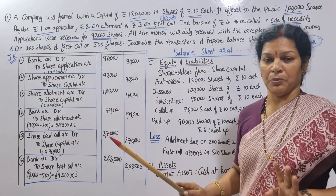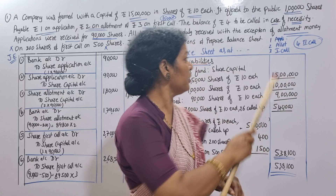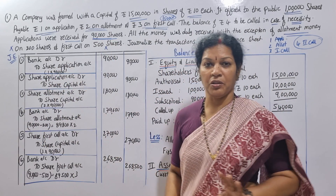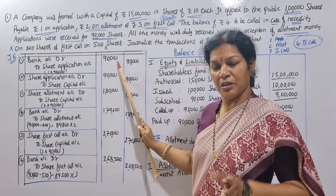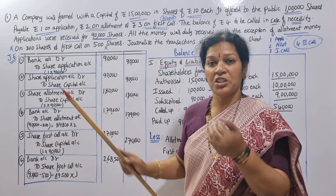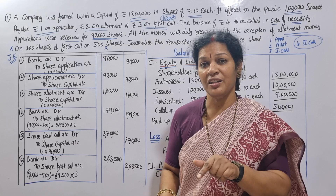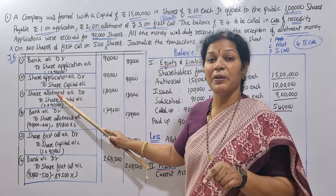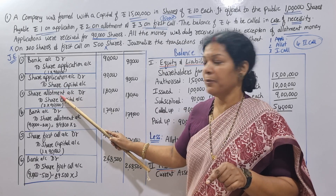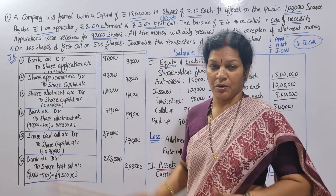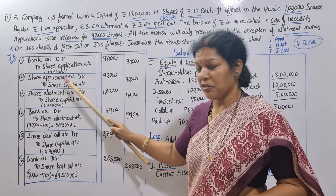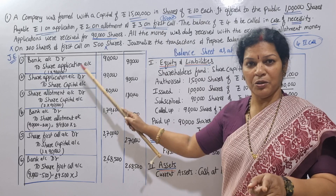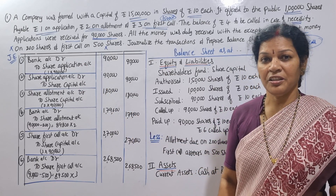The application amount is 1 rupee per share, and 90,000 shares applied. So 1 × 90,000 = ₹90,000. This is debited to Bank Account and credited to Share Application Account. Then we transfer it: Share Application Account Dr. to Share Capital Account — same amount of ₹90,000.